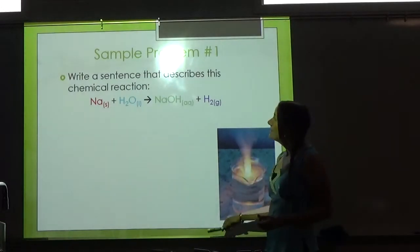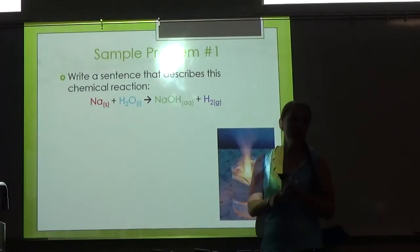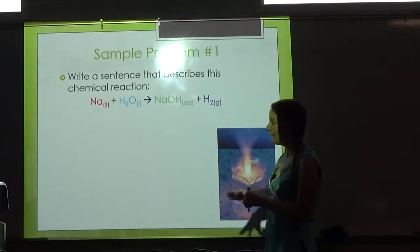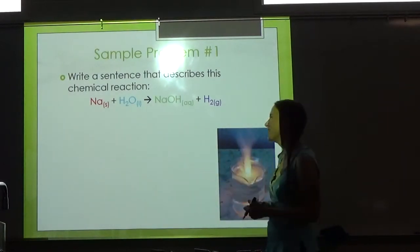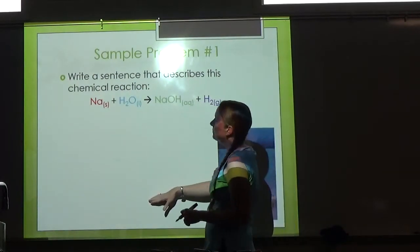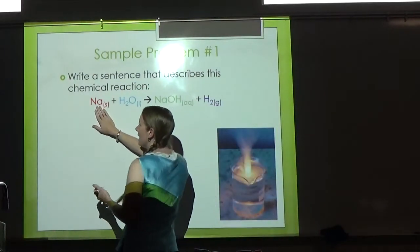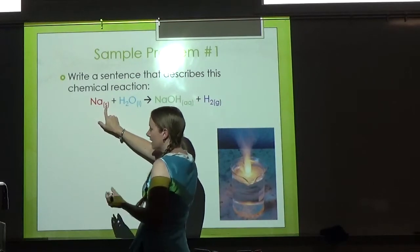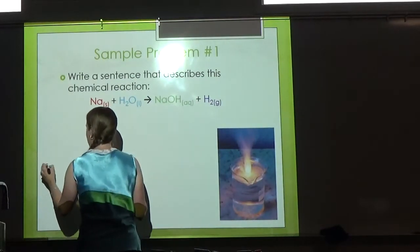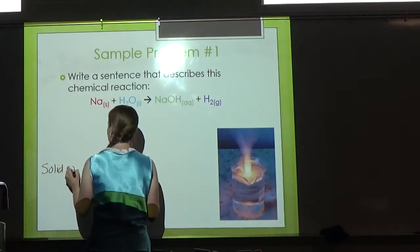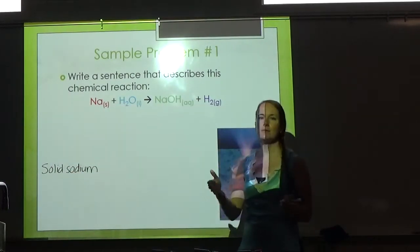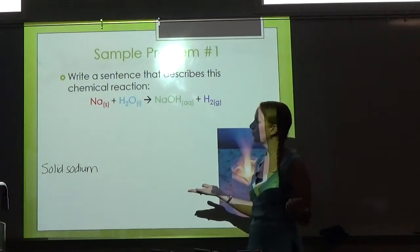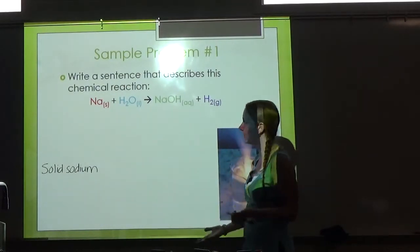Write the sentence that describes this chemical reaction. I'll start with Na—Na is sodium, and it is a solid. So I'm going to start with 'solid sodium.' Don't stress over whether you're supposed to call it 'solid sodium' or 'sodium solid'—you can call it either one. For my plus, I'm going to write 'and.'